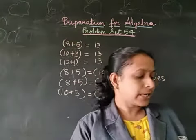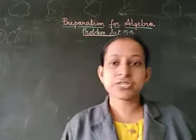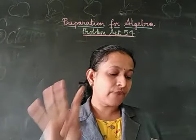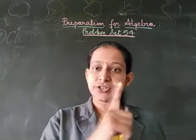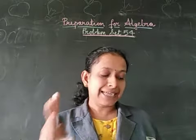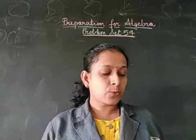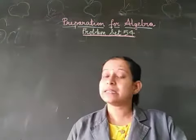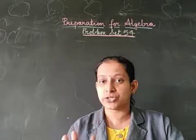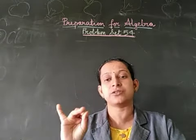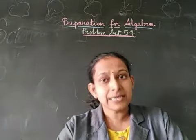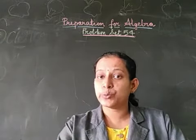Now we will go for the next problem. Find 4 pairs of numbers — one for each of addition, subtraction, multiplication, and division — such that they make the number 18, and write the equalities for each of them. This is similar to the first question, but now you are asked to do all four mathematical operations.